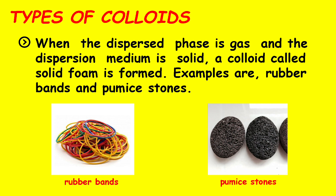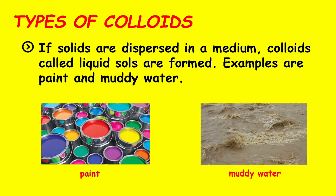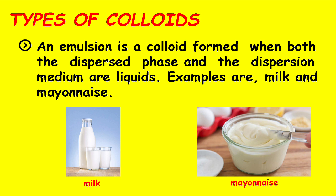When the dispersed phase is gas and the dispersion medium is solid, a colloid called solid foam is formed. Examples are rubber bands and pumice stones. If solids are dispersed in a liquid medium, colloids called liquid sols are formed. Examples are paint and muddy water. An emulsion is a colloid formed when both the dispersed phase and the dispersion medium are liquids. Examples are milk and mayonnaise.